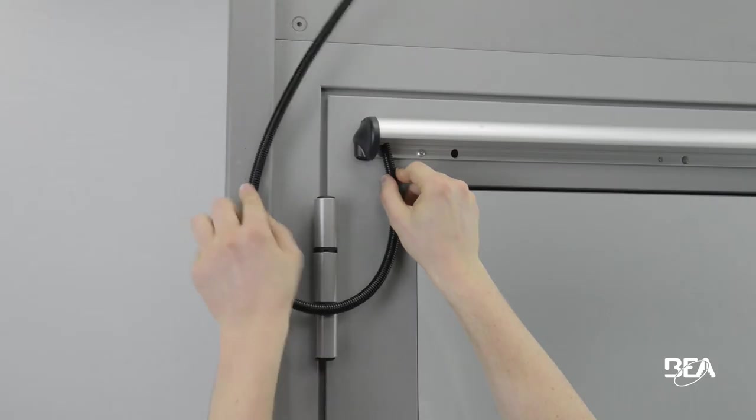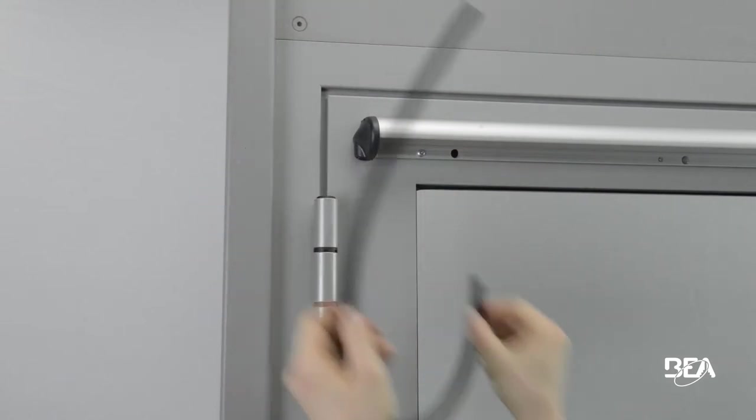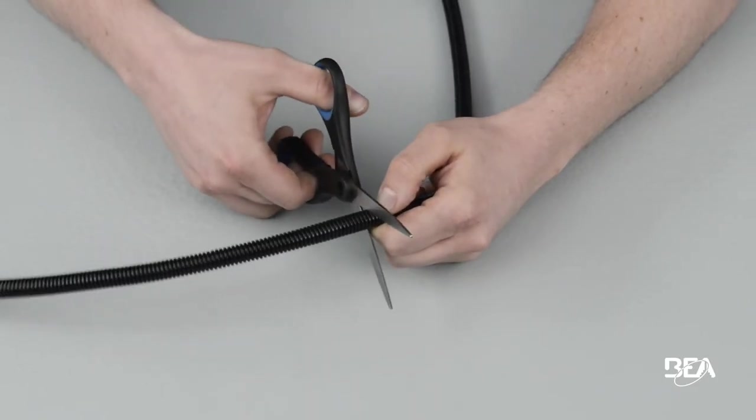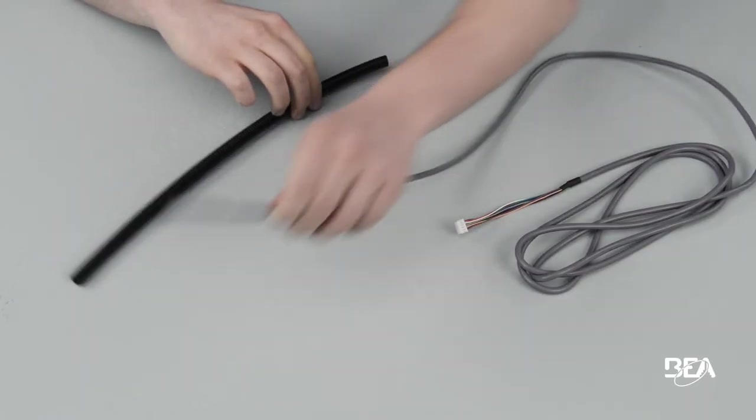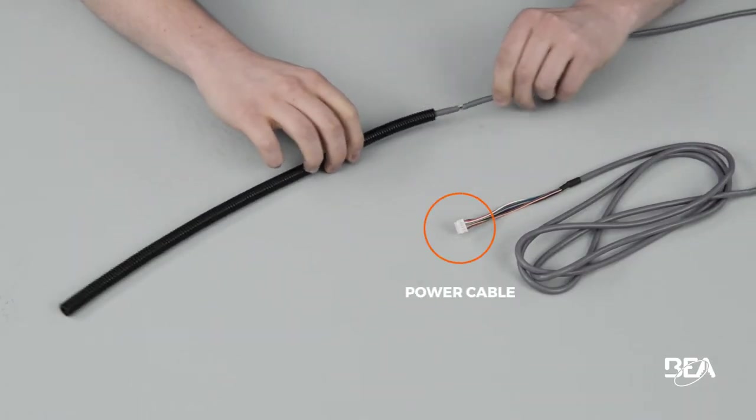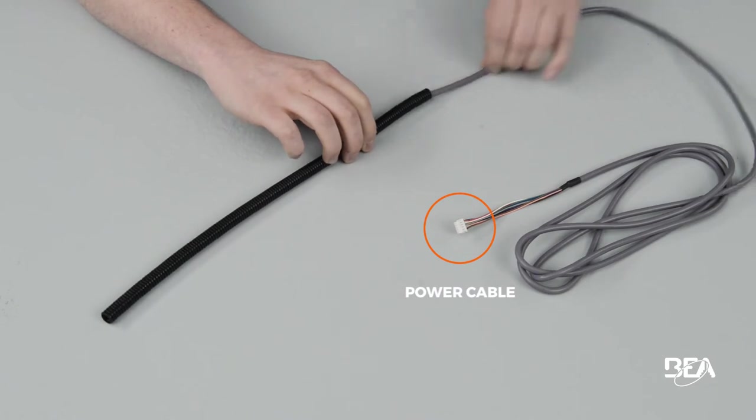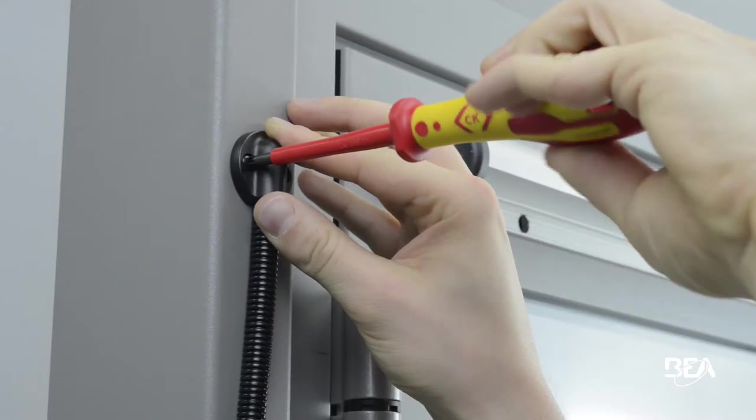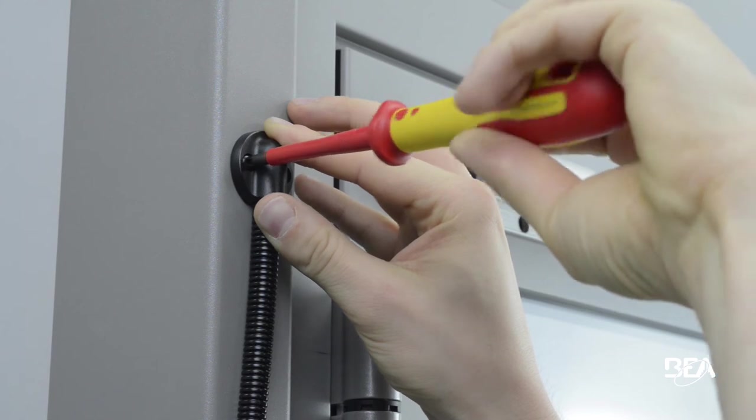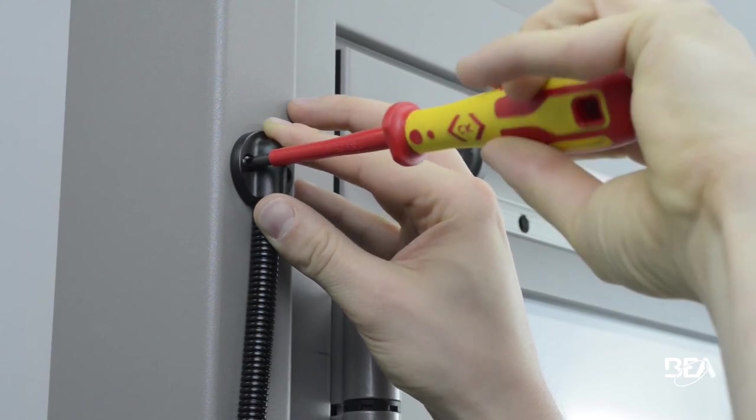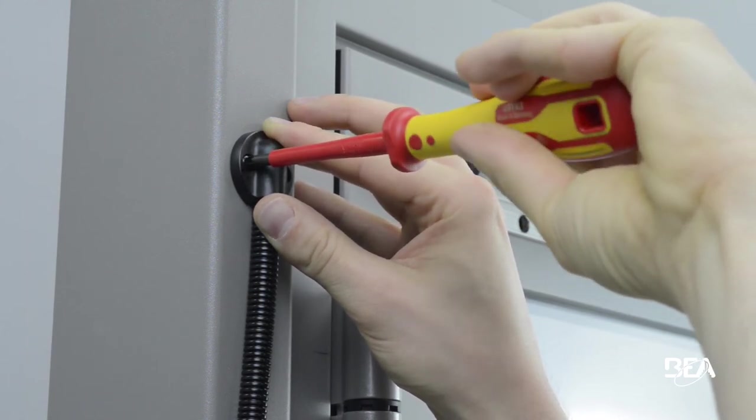Take the flexible tube and determine how long it should be in order to reach the door controller. Cut the surplus to avoid undesired detection. Pass the power cable with the white plug through the flexible tube. Tighten the flexible tube using the cable cap and pass through the rest of the power cable towards the door controller.